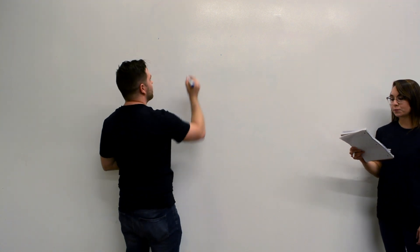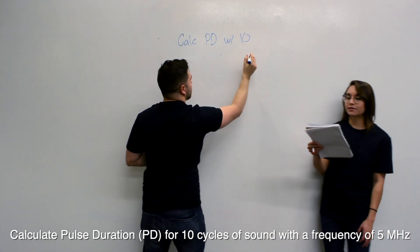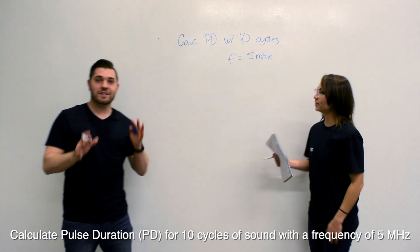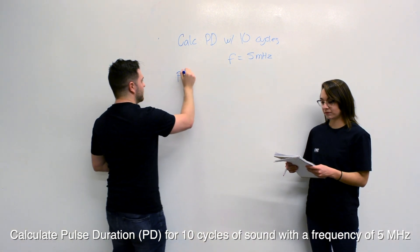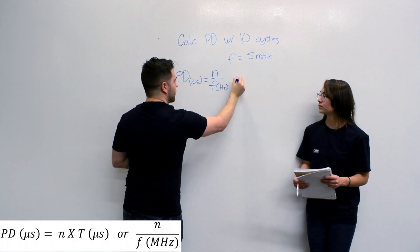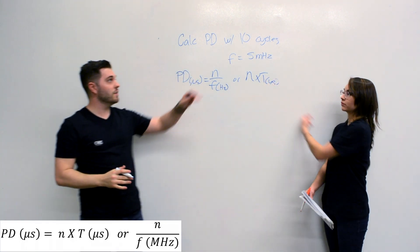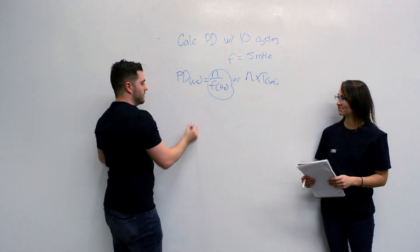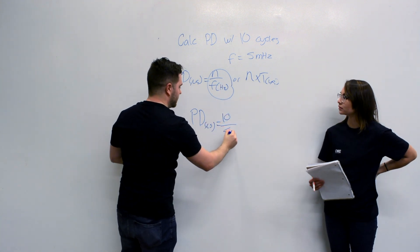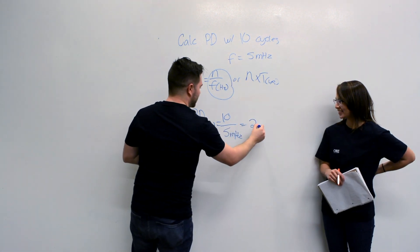So what's our equation? Calculate PD for 10 cycles of sound with a frequency of 5 megahertz. Alright, so we know our equation for pulse duration is: PD in microseconds is equal to either cycles over frequency in hertz, or cycles times period in microseconds. So since we already have cycles and we already have frequency, we're just going to plug and play here. We'll take pulse duration in microseconds is equal to 10 cycles over 5 megahertz. Do the math, comes out to 2 microseconds.